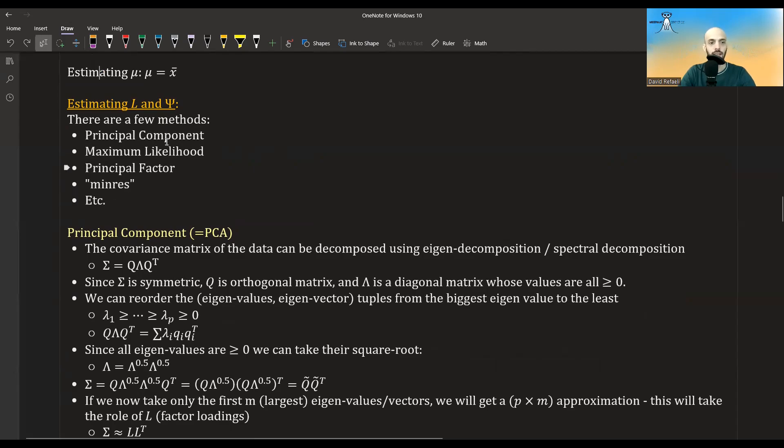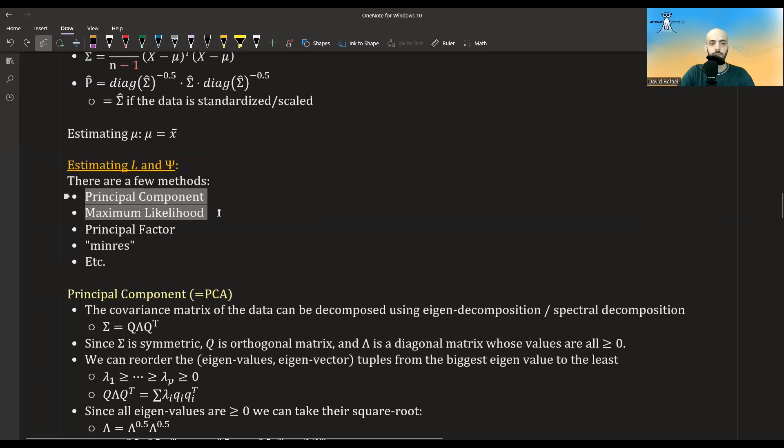And there's many other methods. I will go over these two methods, which is what the chapter 9 of the Applied Multivariate book does. These three methods I might cover in a future video. If you're interested, you should check the Modern Factor Analysis book.